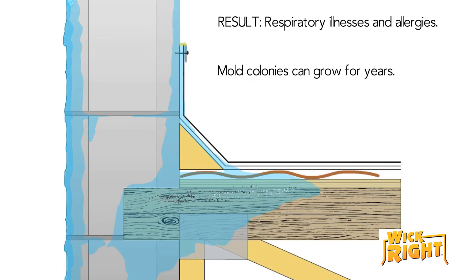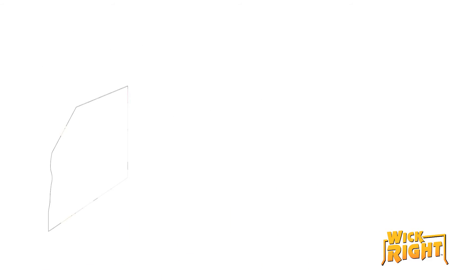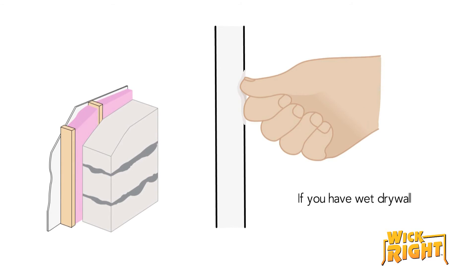Mold colonies can be forming in the wall cavity for years before you notice any mold on the face of the drywall. If the drywall on an exterior wall seems less than sturdy, gives when you push on it, or feels wet to the touch, call a home inspector immediately.